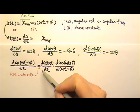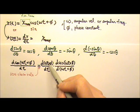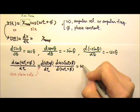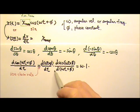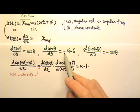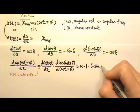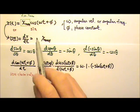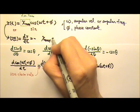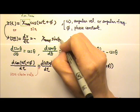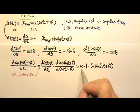Now we can take the derivative. Since φ is a constant, its derivative is zero. The derivative of t is 1, and ω is a constant coefficient that stays. The derivative of cosine gives negative sine, so the derivative of cosine(ωt + φ) gives negative sine(ωt + φ). Because of the chain rule, we multiply by ω on the side. So our velocity as a function of time is −Aω·sin(ωt + φ).